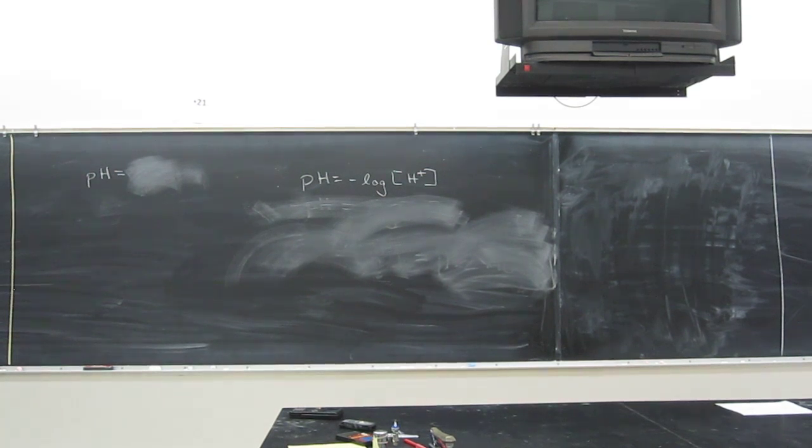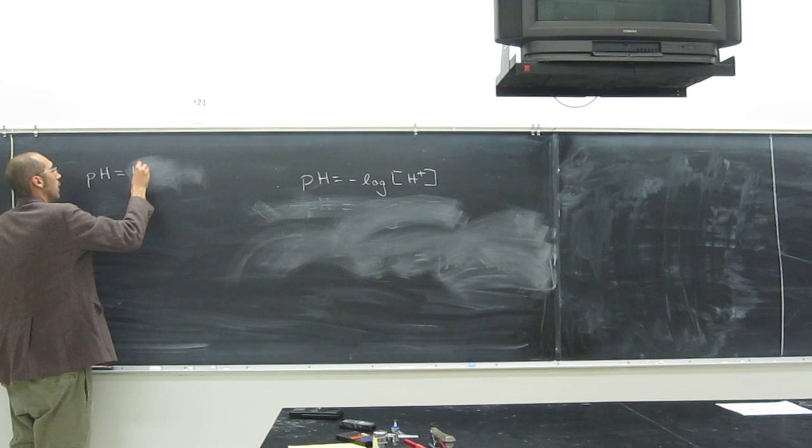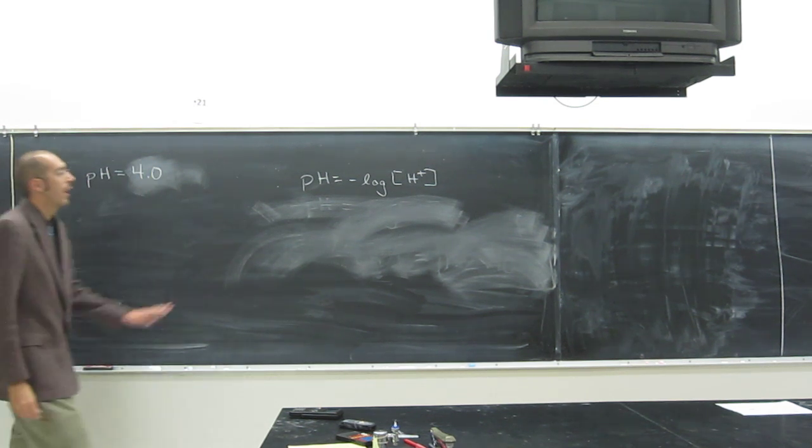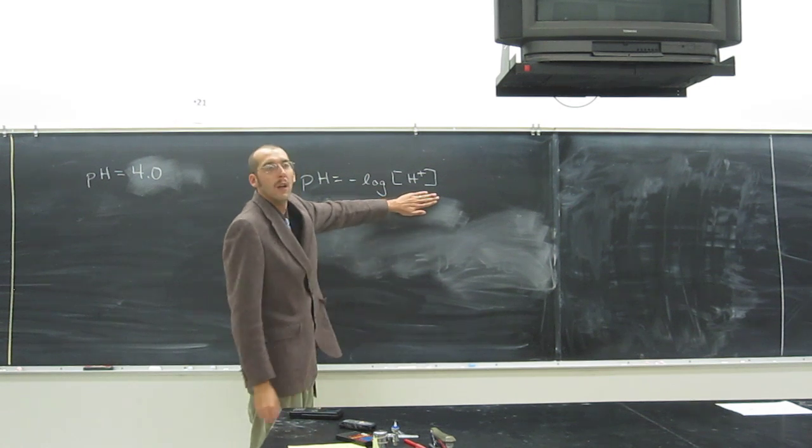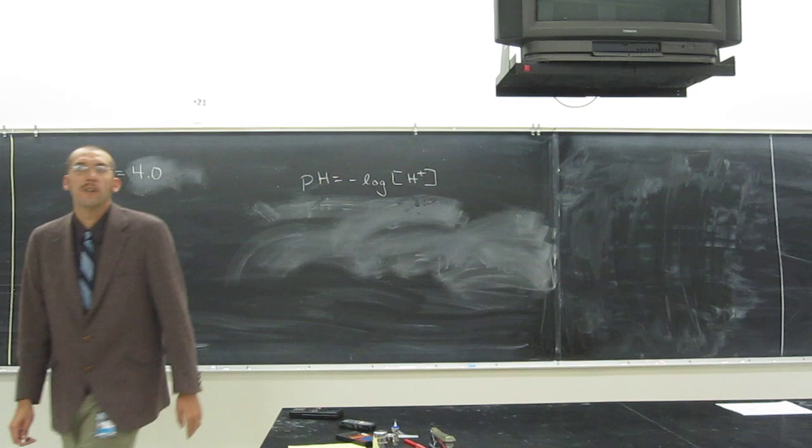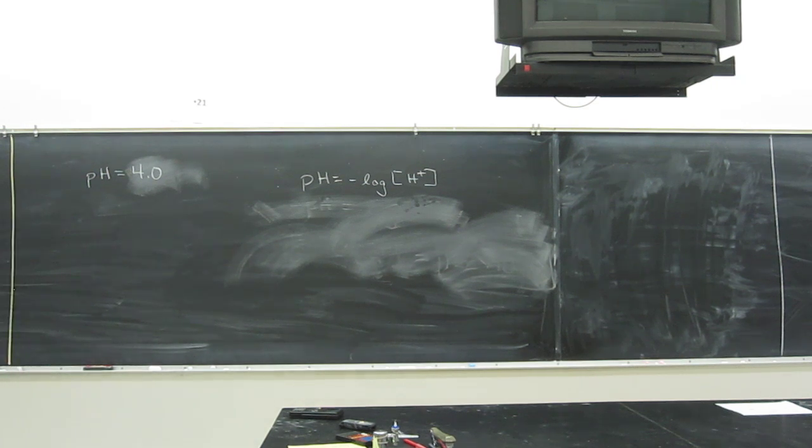Okay, so let's try this one now. It says, calculate the hydroxide ion concentration of a solution with a pH of 4.0. Okay, so we're looking for the hydroxide ion concentration, but pH gives us the hydronium ion concentration, or the proton concentration, right?